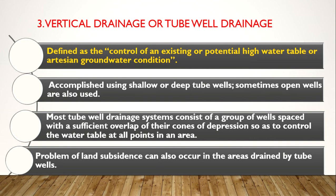Vertical drainage, or tube-well drainage, is defined as the control of an existing or potential high water table or artesian groundwater condition. Shallow or deep tube wells or open wells are used to remove groundwater. Most tube-well drainage systems consist of a group of wells spaced with sufficient overlap of their cones of depression. Water discharged from the wells is used for irrigation or domestic purposes, while excess subsurface water is drained.